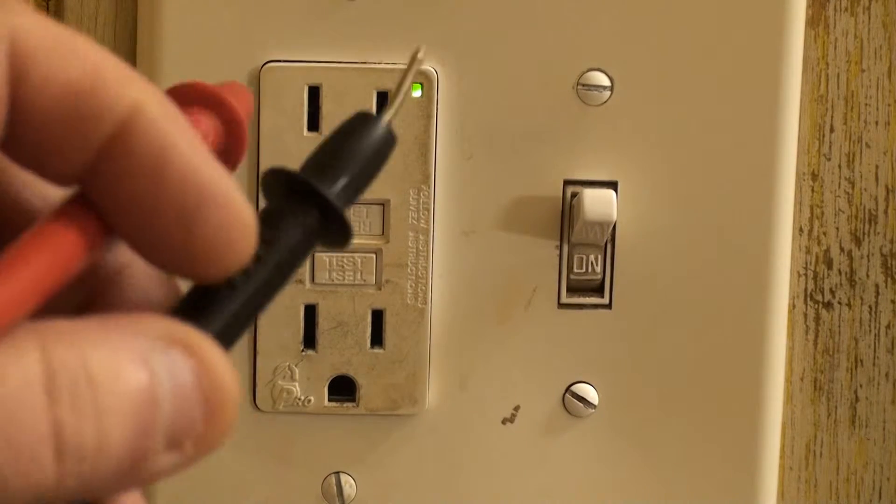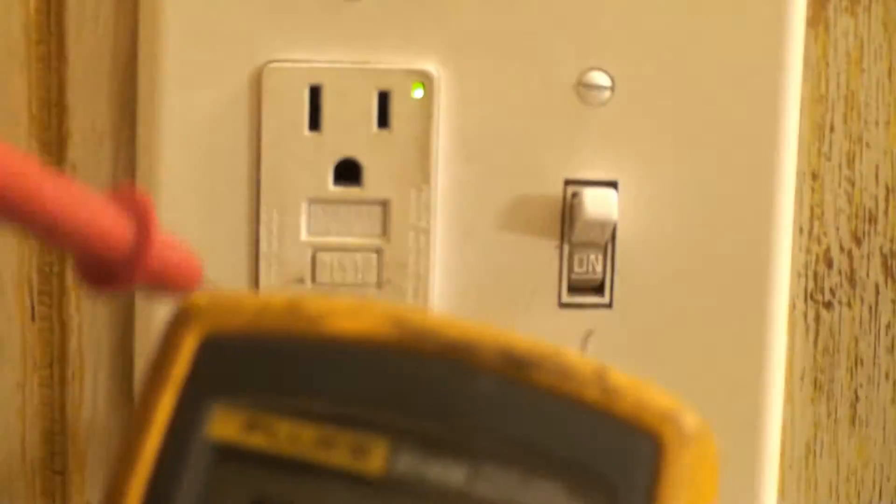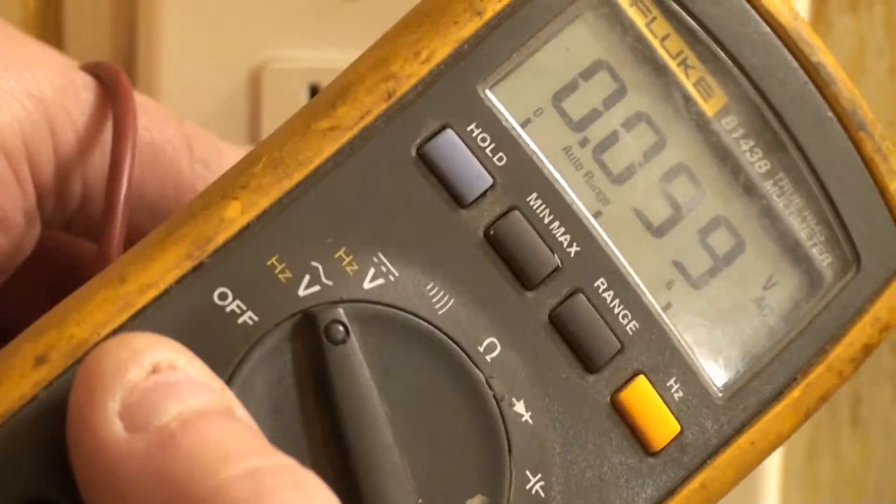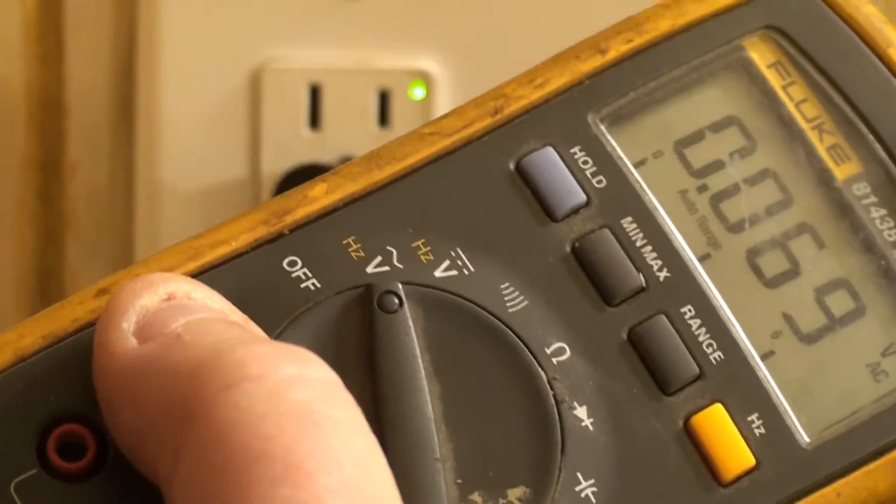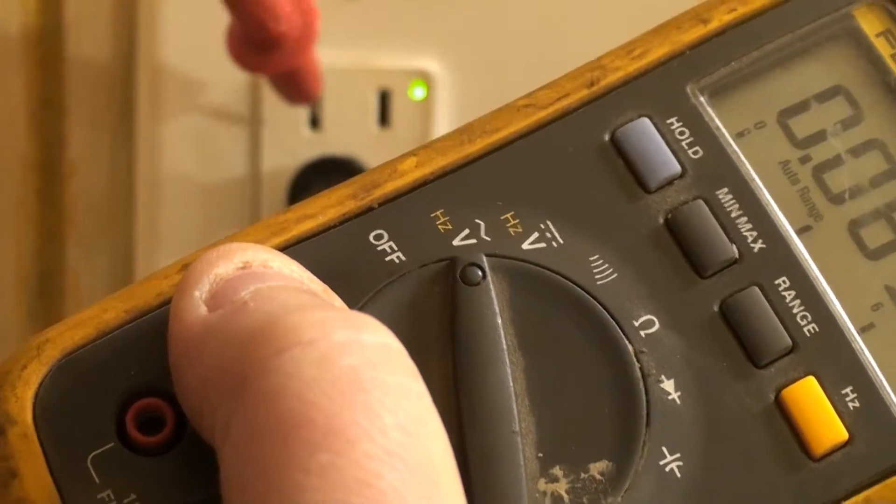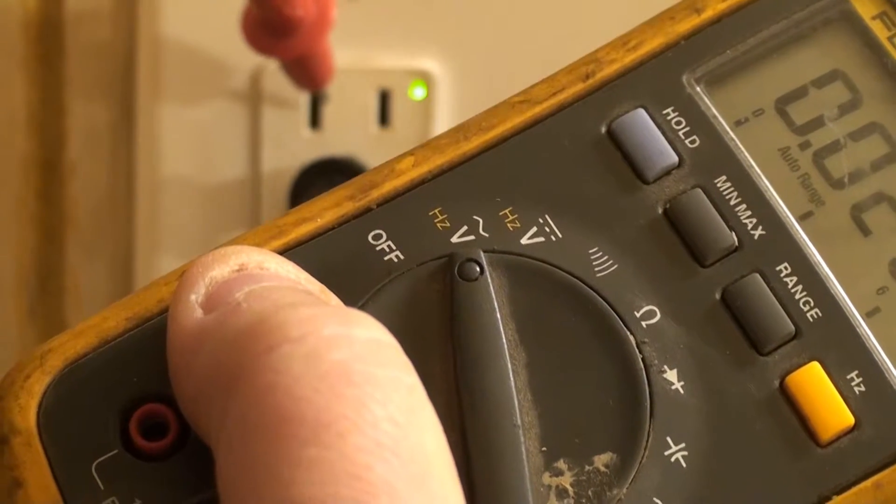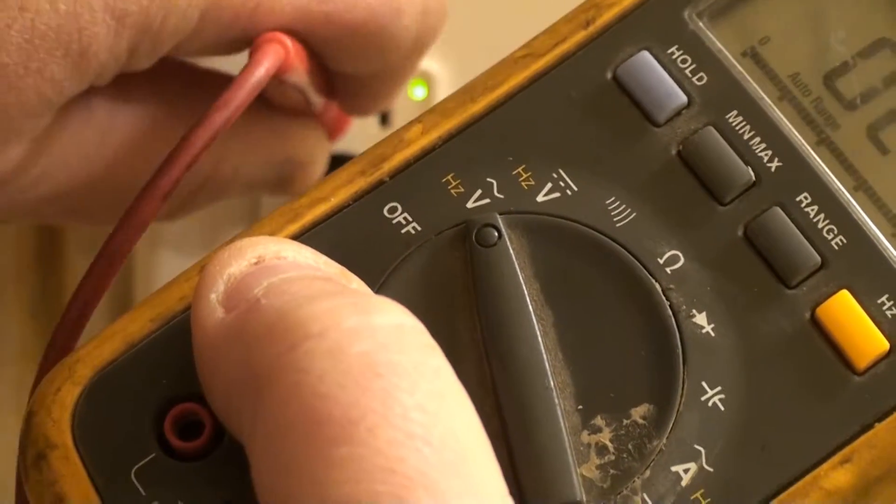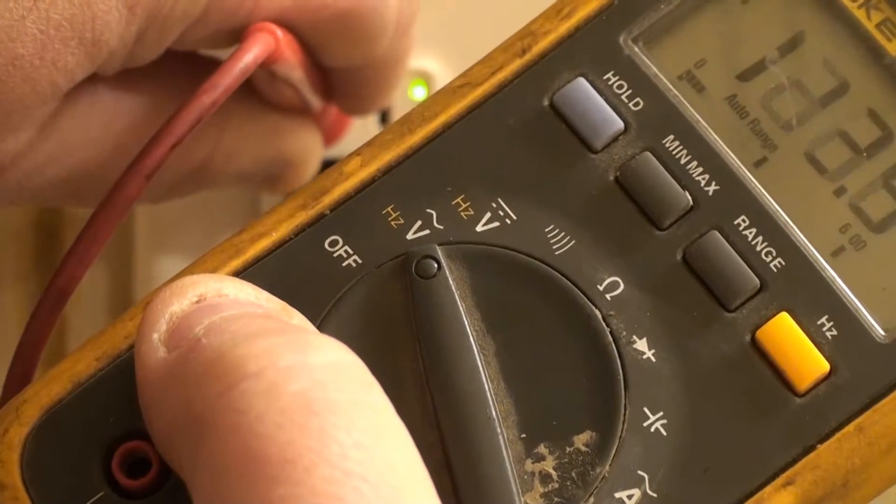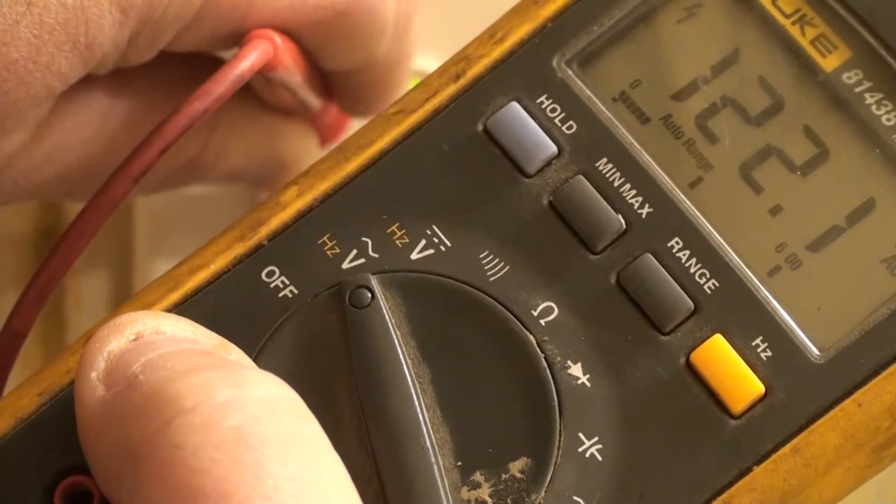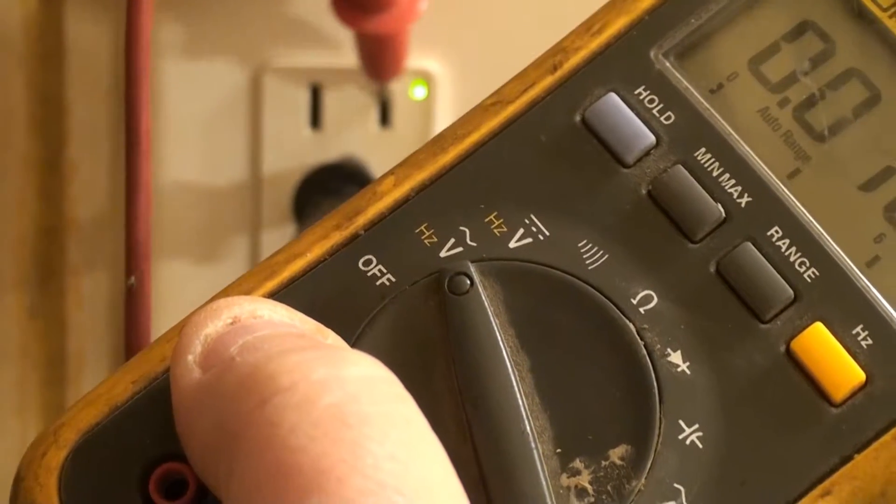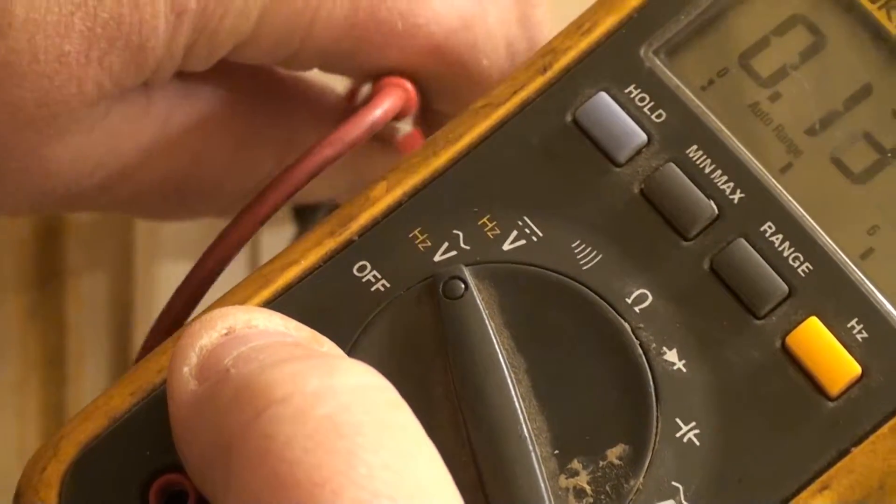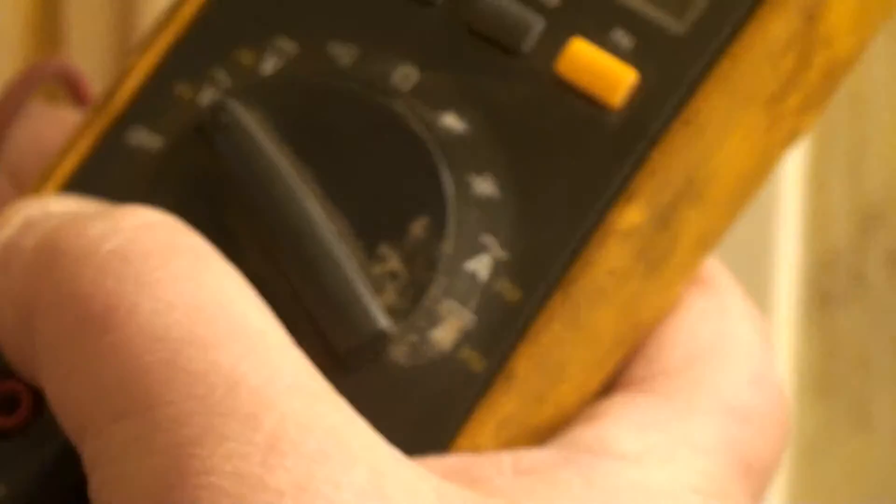But it's not wired correctly. If we put our probe in down here, and we, I'm trying to get everything in. Okay, we got the probe in the lower, and we take our red probe, put it in the big slot here, which is supposed to be ground. You'll see we're, oh come on. There we go. So we're at 122 volts. If we put it in a small slot here, which is supposed to be the hot, you'll see we're not getting anything. Make sure my ground is still good in there.